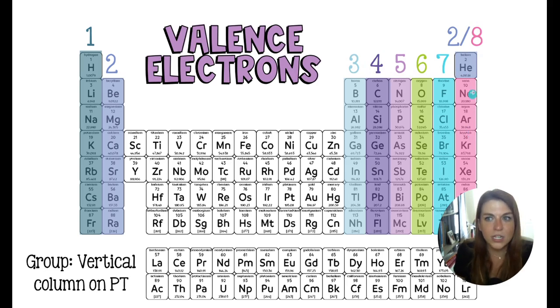Now group 18 is a little strange because it says 2 and 8. Helium is too small to have eight valence electrons, so it only has two. And then everything below it will have the eight valence electrons. And there will be more information on why that happens in a future video.